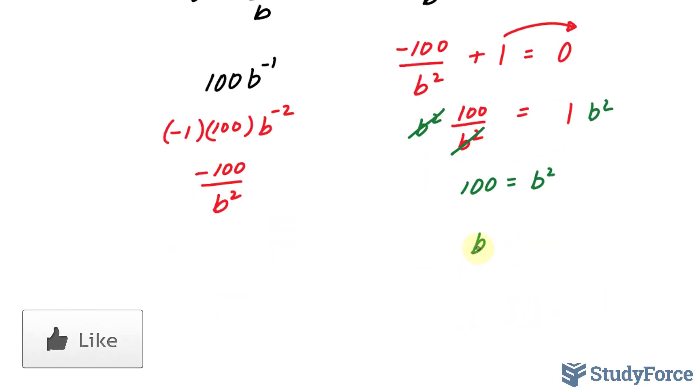Square rooting both sides, we end up with B is equal to plus minus 10. Now since we are told that the two numbers are positive, we can disregard this negative 10. So B is only equal to 10. Again, this is one of our critical points.